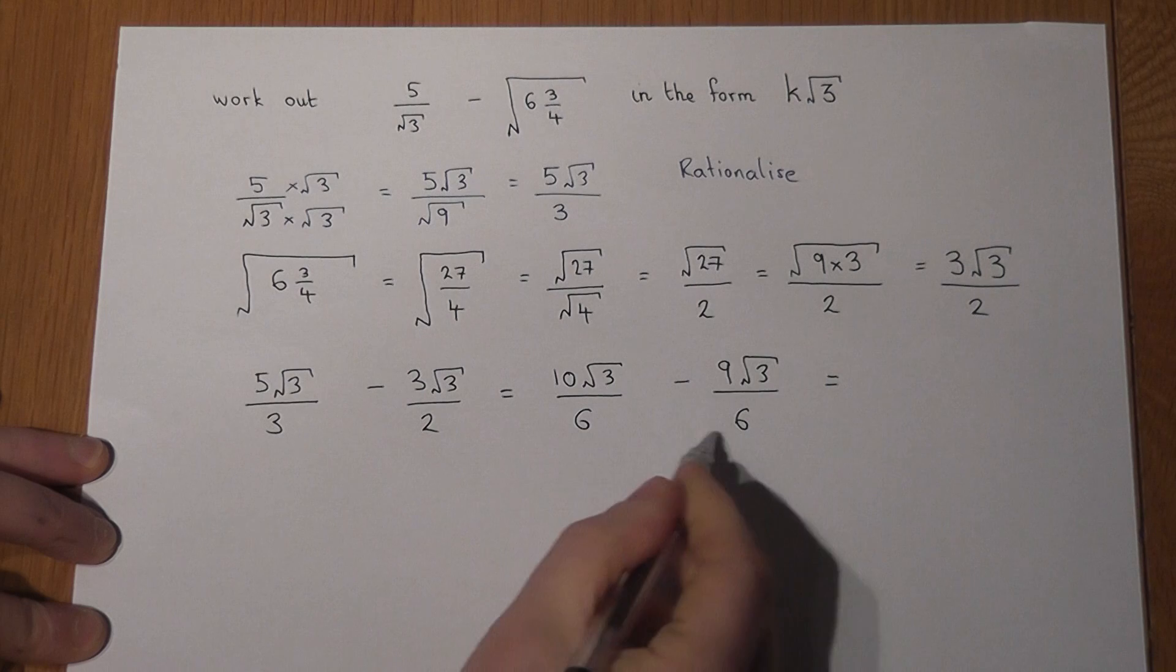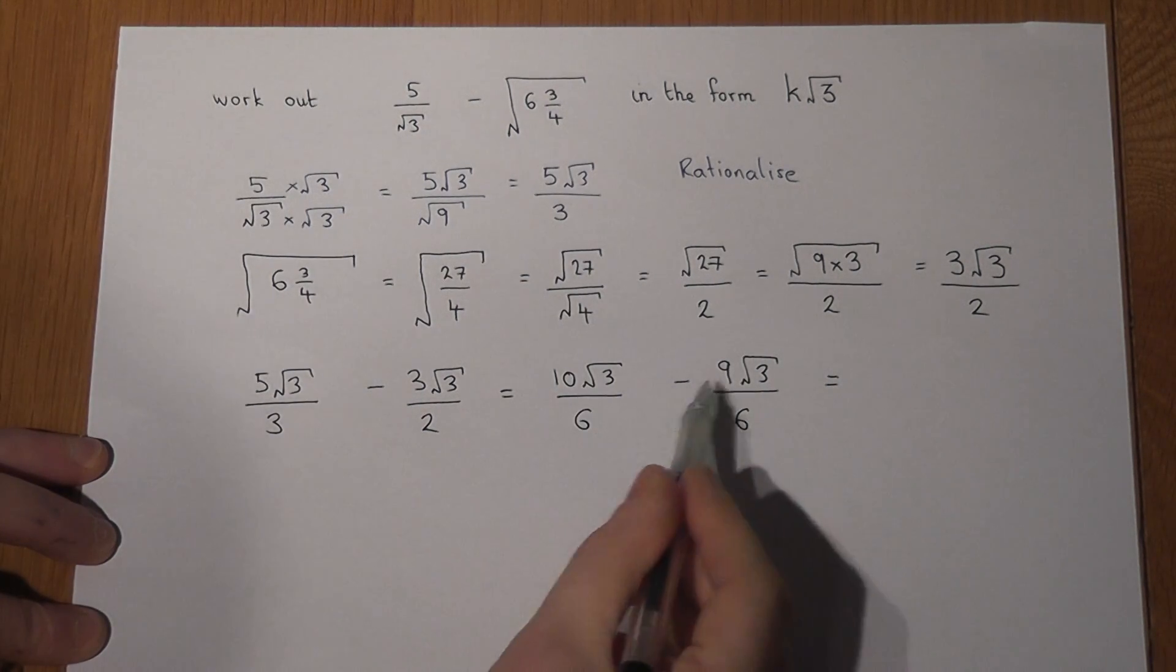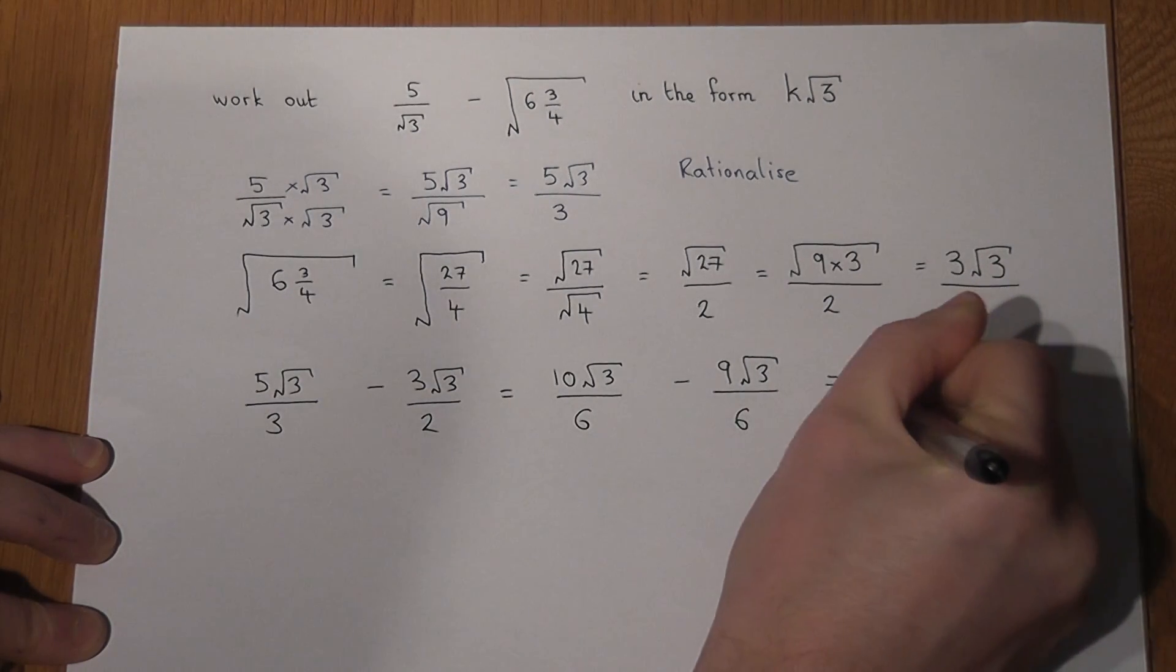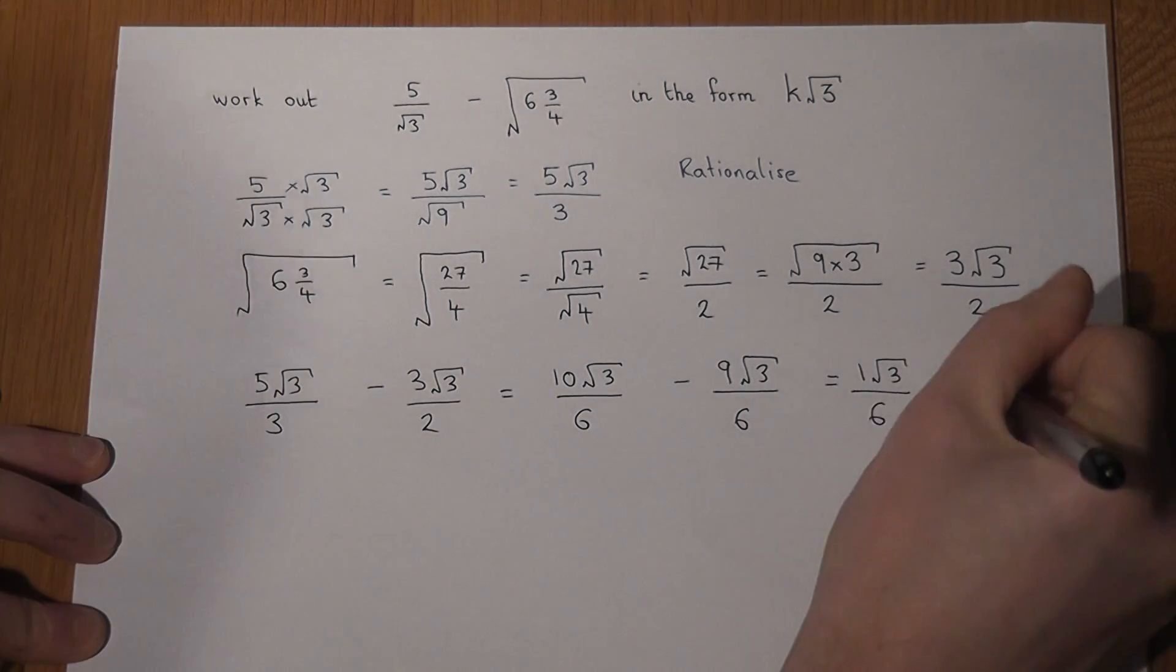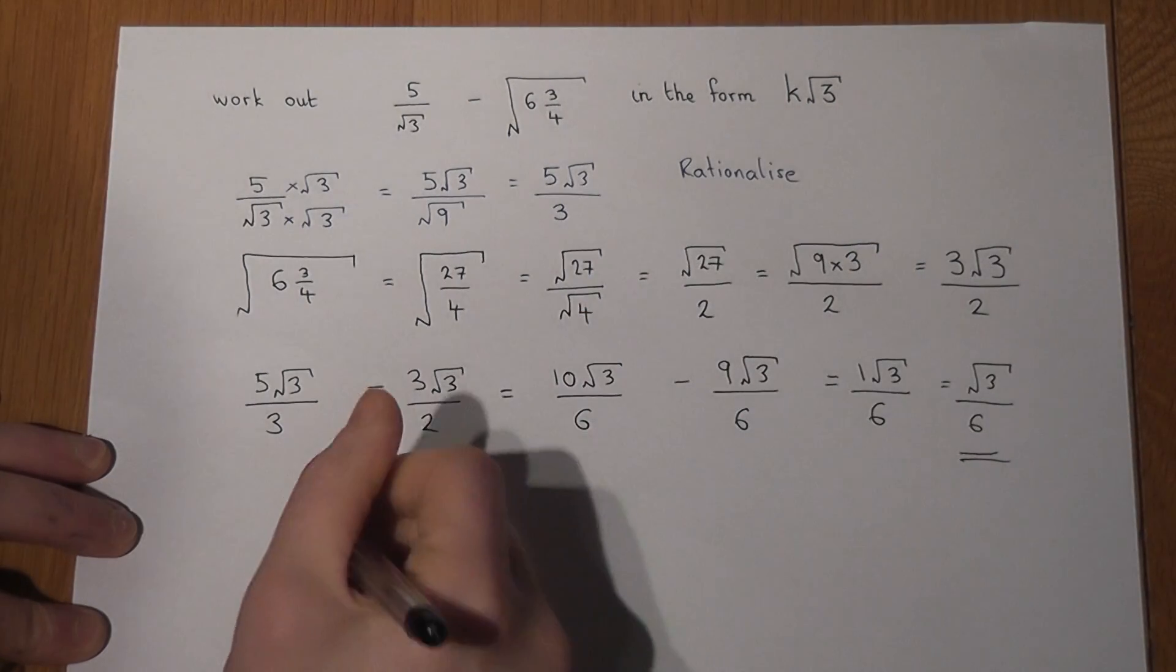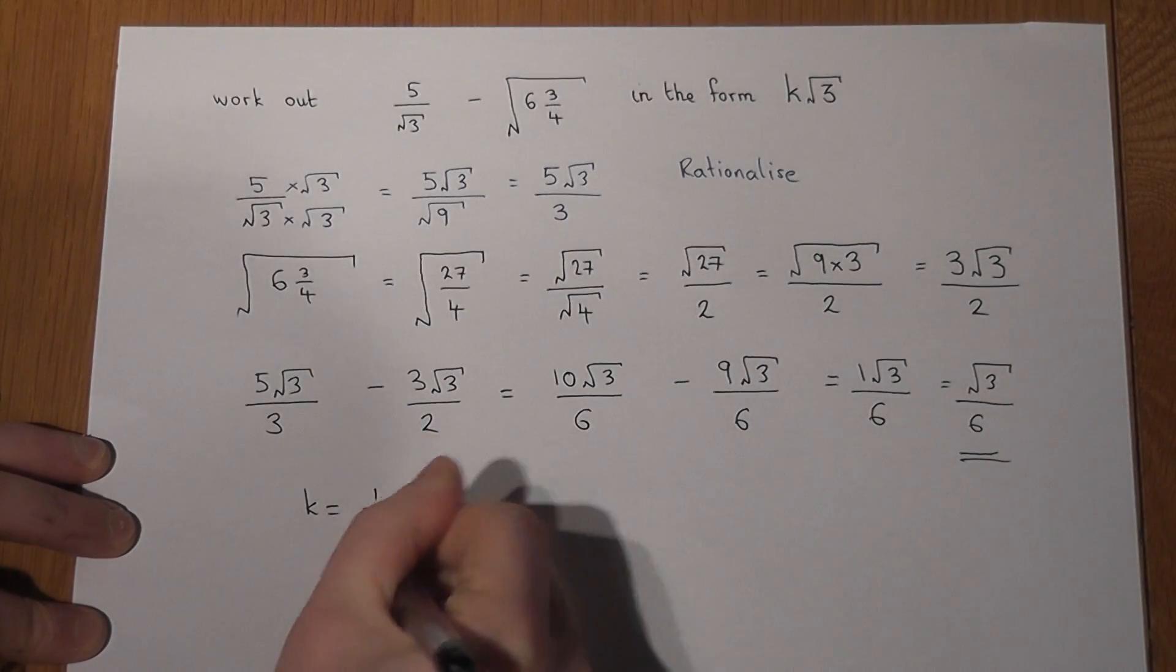Then they're both over the same denominator. 10 root 3 take 9 root 3 is 1 root 3, all over 6, which I can just write as root 3 over 6. And this is in the form k root 3, where k is just equal to 1 sixth.